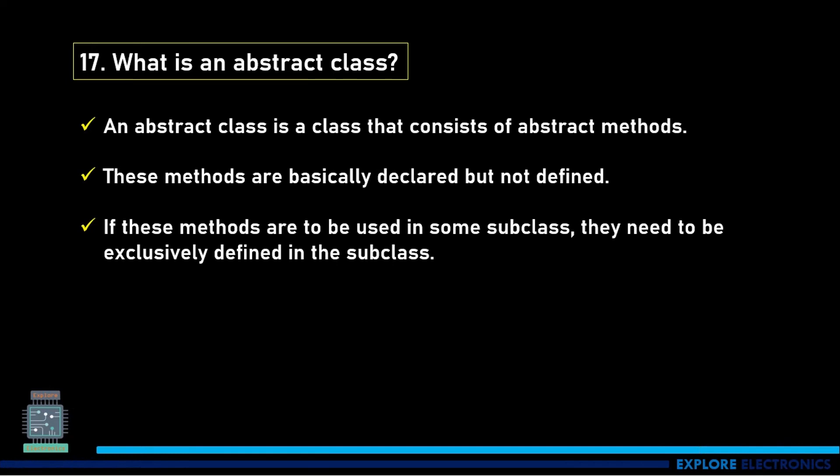What is an abstract class? An abstract class is a class that contains abstract methods. These methods are basically declared but not defined. If these methods are to be used in some subclass, they need to be exclusively defined in the subclass.